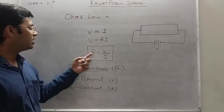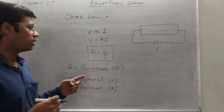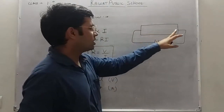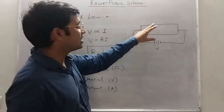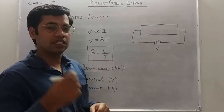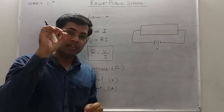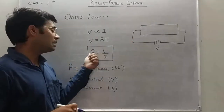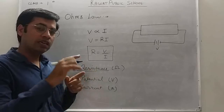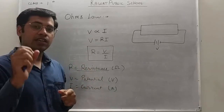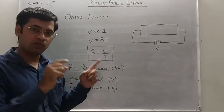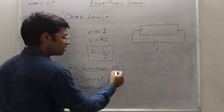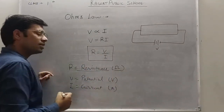This resistance is essentially a hindrance to the flow of current — that property is known as resistance. Resistance is a hindrance to the flow of current, and the unit of resistance is Ohm.